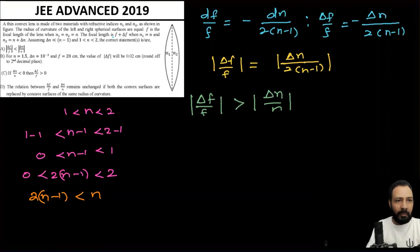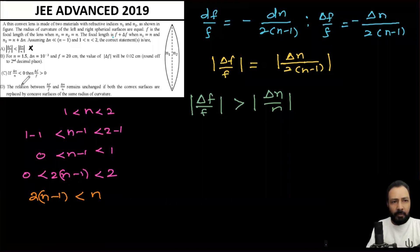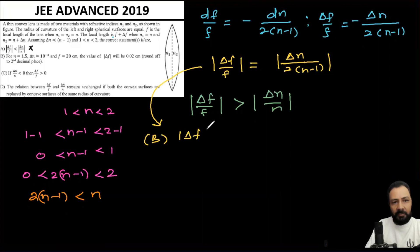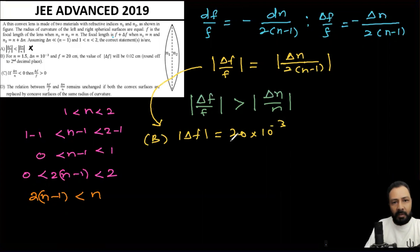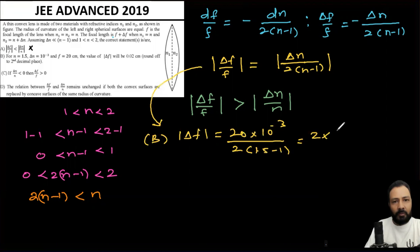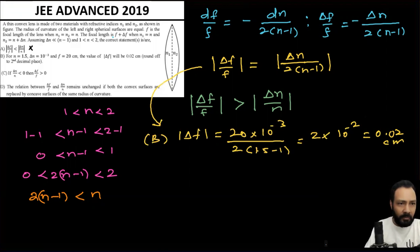Option A is rejected because we derived greater than, not less than. Now checking option B using the exact relation: |delta f| equals f times |delta n| / [2(n minus 1)]. With f equals 20, delta n equals 10⁻³, and n equals 1.5, we get 2(1.5 minus 1) equals 1, so |delta f| equals 20 times 10⁻³ divided by 1 equals 2 times 10⁻² equals 0.02 cm. Option B is correct.